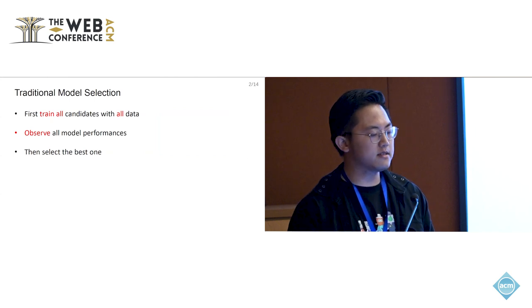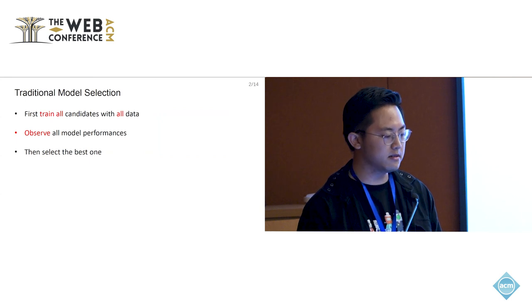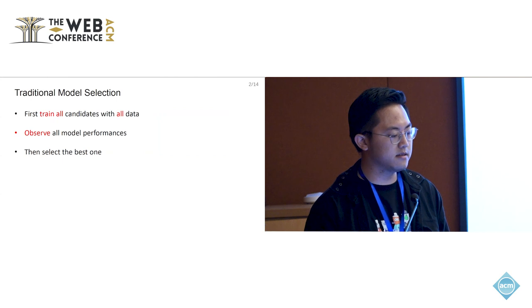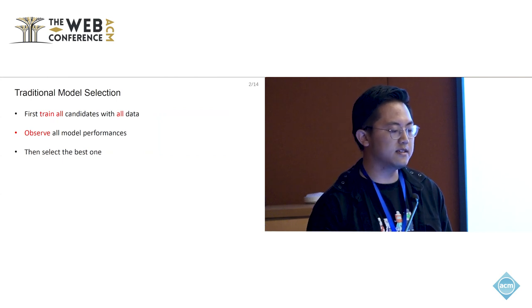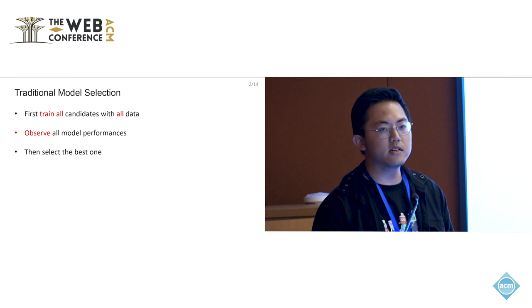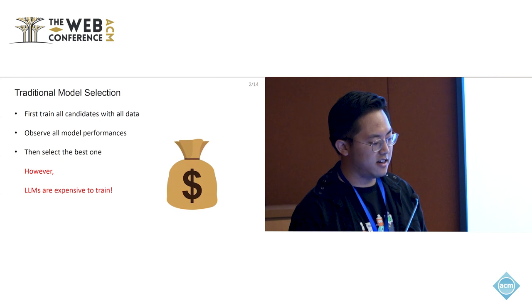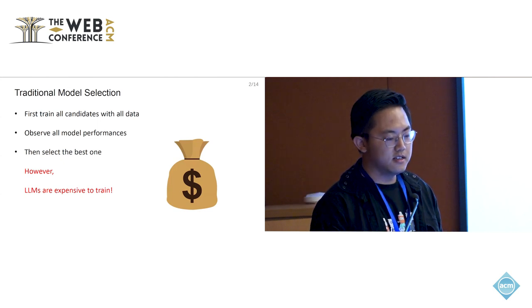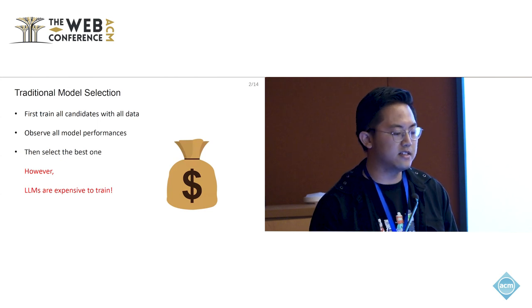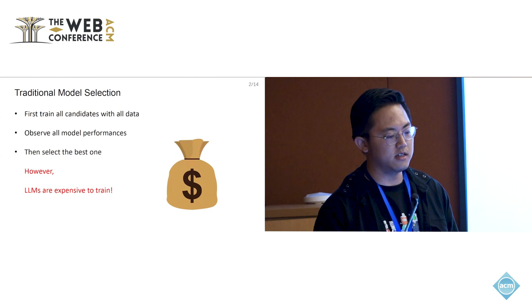For traditional model selection methods, they typically need to first train all candidate models with an entire or a big amount of data, and then evaluate all of the models and observe their performance. Then, based on the observed performance, they can select the best one. In the age of large language models, what's the problem with this? The large language models are so expensive. We don't want to spend money to train all of the models but then eventually use only one of them. So how can we reduce such exploration cost?